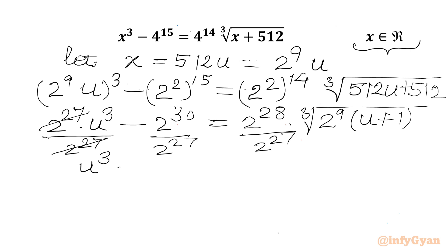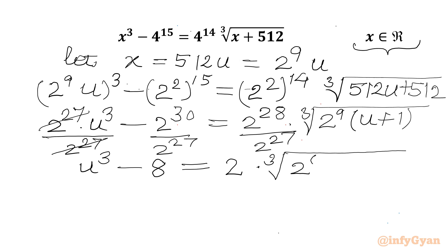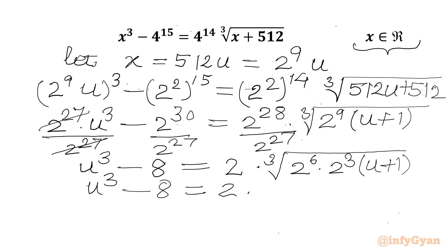So u cube minus 2 power 30 minus 27, which is 2 power 3, so we can write directly 8. Equal to 2 power 28 minus 27, which is 2 power 1, or we can write 2 directly times cube root of 2 power 9. We can split that as 2 power 6 times 2 power 3. So u cube minus 8 will be equal to 2 times cube root of 2 power 6 times cube root of 2 power 3, which is 8, times u plus 1.